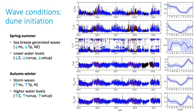Wave conditions were measured during the study period at 10 meters depth. Time series of significant wave height, peak wave period, and wave direction are shown, as well as sea level measurements and water levels obtained from numerical modeling. The monthly mean and standard deviation of all these variables are also shown; for wave direction, the monthly mode was computed. During the spring and summer months, low-energy sea breeze generated waves are predominant, together with lower water levels. Storm waves associated with cold fronts are common during autumn and winter months, when water levels are higher.